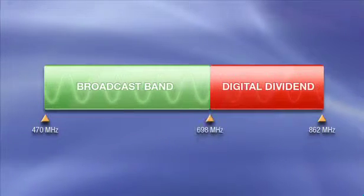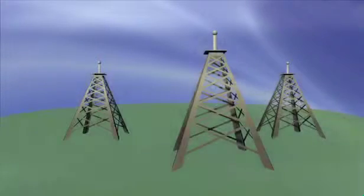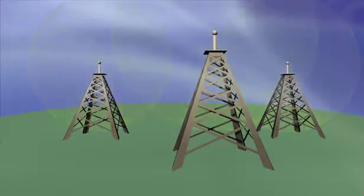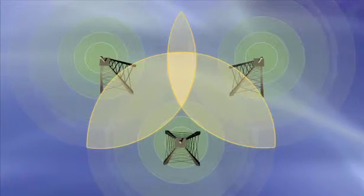As the digital dividend results in decreasing frequency spectrum availability, television broadcasters are resorting more and more to operating single frequency networks, or SFNs, where all the transmitters in the coverage area are set to the same frequency. While this enables efficient spectrum usage, it does increase the possibility of co-channel interference problems since each transmitter is potentially an interferer to all others.